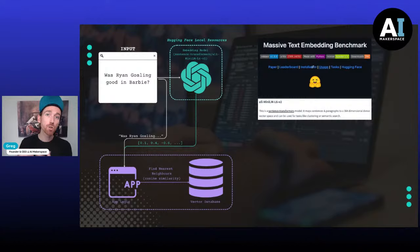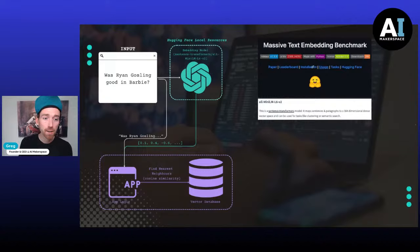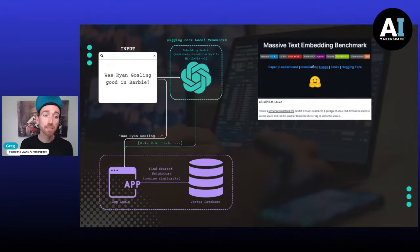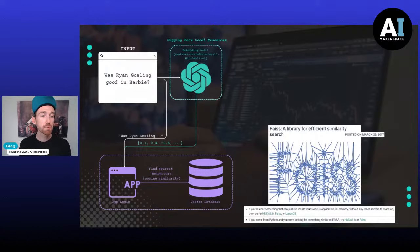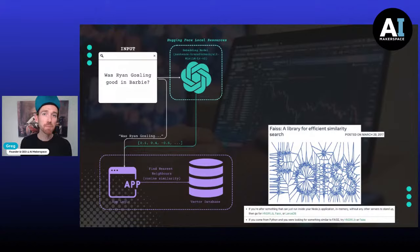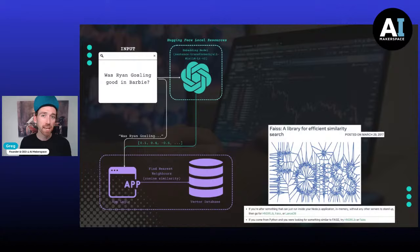To create the embeddings, we need to choose an embedding model. Today we're using the Mini LLM L6 V2, which you can find on the Massive Text Embedding Benchmark on Hugging Face. We also need to choose a vector database — we're going with FAISS, Facebook AI Similarity Search, which came out in 2017. It's completely open source, works very fast to find similar vectors within a database, and is a really powerful tool to start learning about this kind of system.